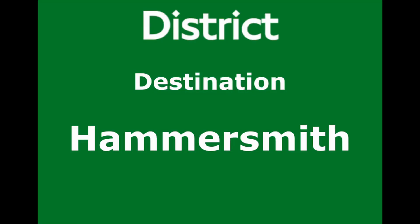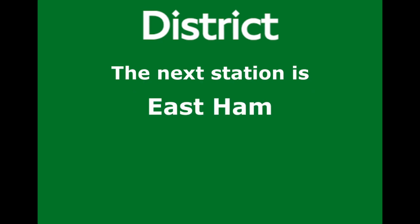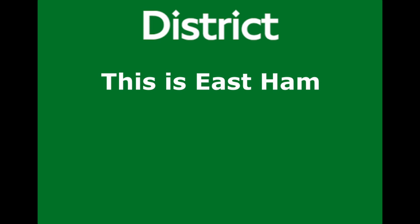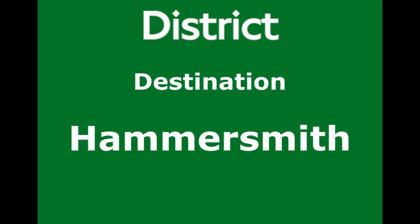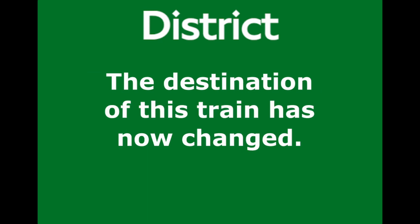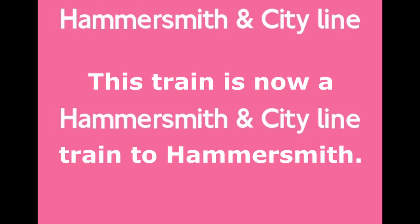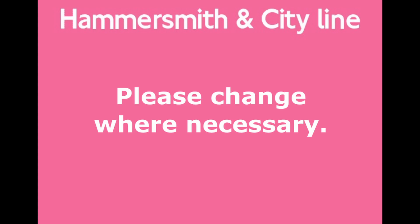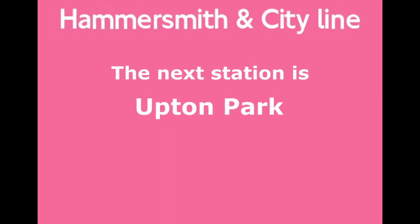This is a District Line train to Hammersmith. The next station is East Ham. This is East Ham. This is a District Line train to Hammersmith. The next station is Upton Park. The destination of this train has now changed — this train is now a Hammersmith and City Line train to Hammersmith. Please change where necessary. The next station is Upton Park.